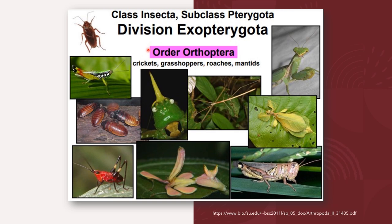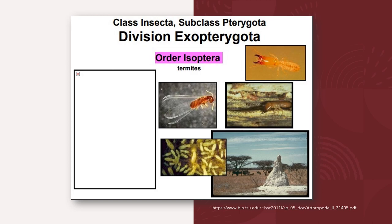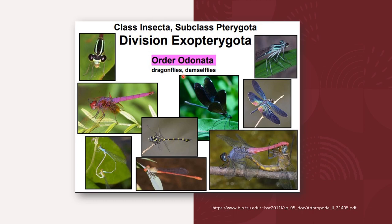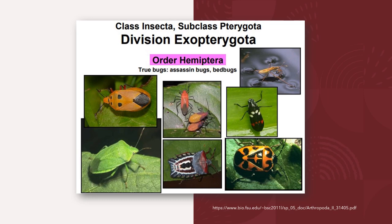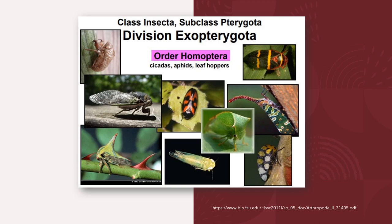The order Orthoptera exhibits hemimetabolous development and includes crickets, grasshoppers, cockroaches, and mantids. The cockroaches and mantids are sometimes placed in the order Dictyoptera, or the separate orders Blattodea and Mantodea. The order Isoptera includes termites. The order Odonata includes dragonflies and damselflies. The order Hemiptera includes true bugs, assassin bugs, and bed bugs. The order Homoptera includes cicadas, aphids, and leafhoppers.